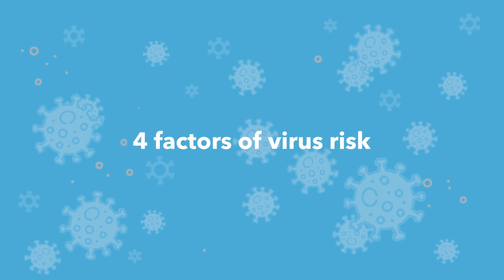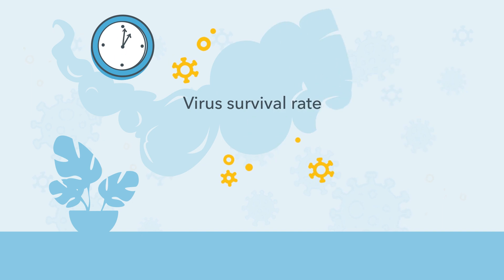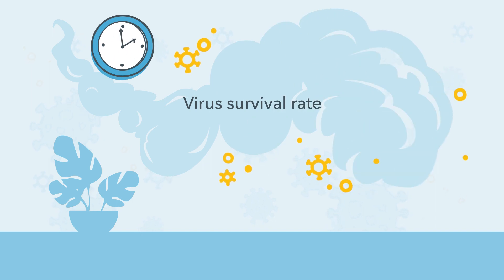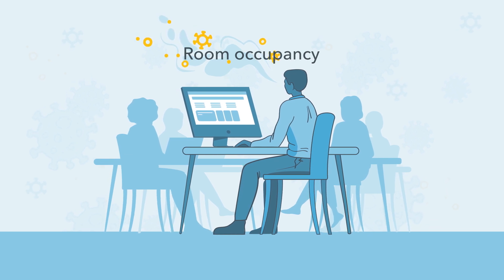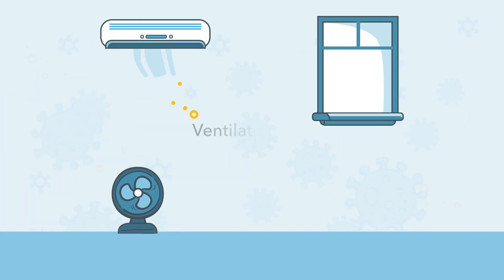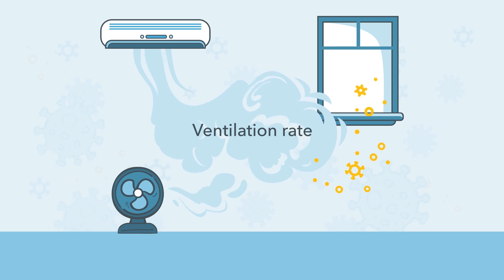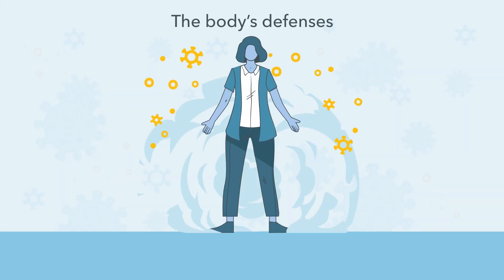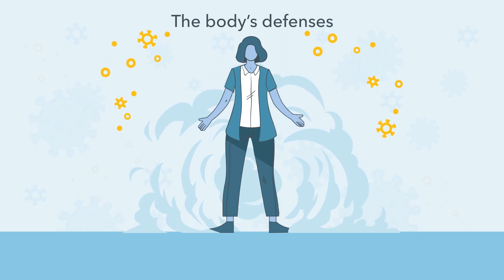The Virus Risk Indicator is affected by four factors of virus risk: virus survival rate, or how long airborne micro-droplets remain infectious; room occupancy, or carbon dioxide levels from people breathing; ventilation rate, or how much and how often fresh air is coming into a space; and the body's defenses, or the effect of indoor air quality on the body's immune system.